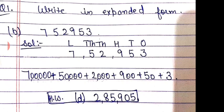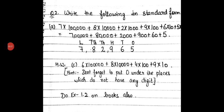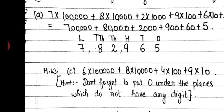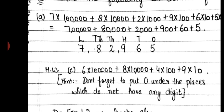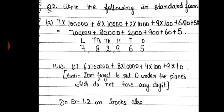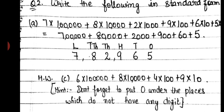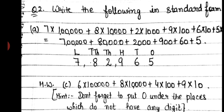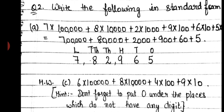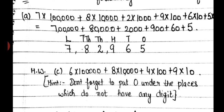The B part you will do in your notebooks yourself. Second question: write the following in standard form. Earlier we expanded — like stretching a rubber band; when you leave it, it comes back to standard or short form. The number is 7×1 lakh + 8×10,000 + 2×1,000 + 9×100 + 6×10 + 5×1. First multiply face value with place value: 7 lakh + 80,000 + 2,000 + 900 + 60 + 5. Then write the places and fill them in — 7 under lakhs, 8 under 10,000, 2 under 1,000, 9 under 100, 6 under tens, 5 under ones.